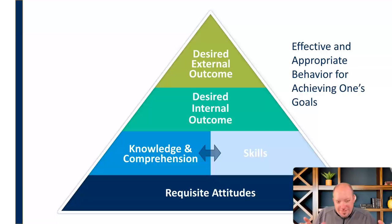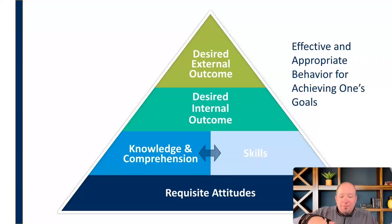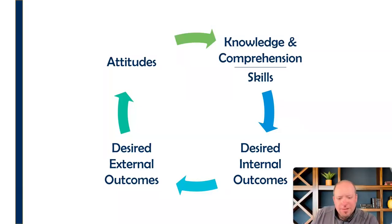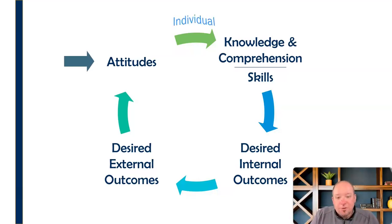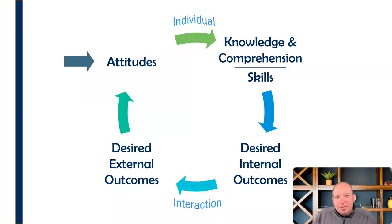We move through the different areas of the pyramid until we get to the peak — that effective and appropriate behavior — starting with our attitudes, then moving through the combination of knowledge and comprehension and skills, into desired internal outcome and desired external outcome. Deardorff also presented this as a process — a continuing cycle. The first couple of things are individual: attitudes, knowledge and comprehension, and skills are individual pursuits. Whereas the desired internal outcomes and desired external outcomes have to do with interaction and interacting with that culture, then learning to internalize those things and behave in a way that is culturally appropriate and effective.